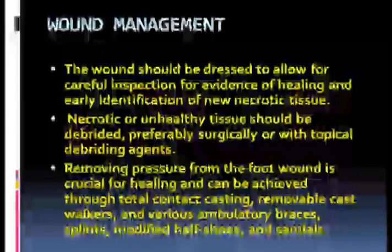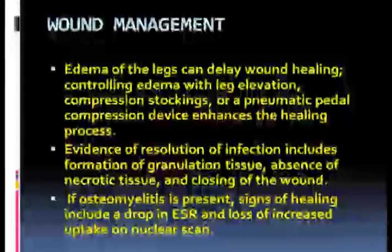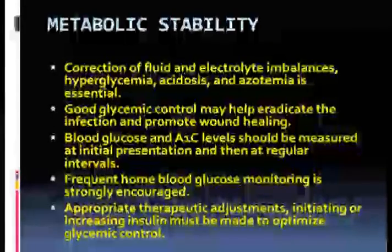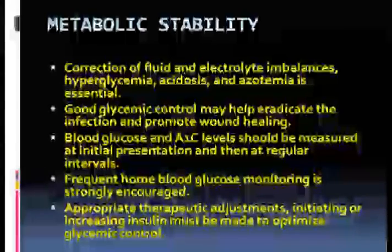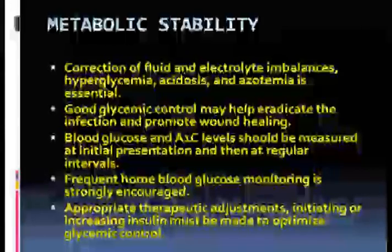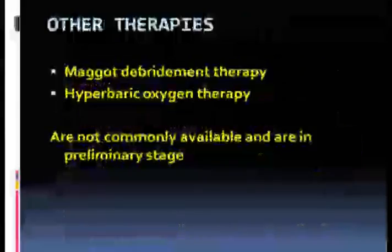If osteomyelitis is present, signs of healing include a drop in ESR and loss of increased uptake on nuclear scan. We also have to take care of metabolic stability. Correction of fluid and electrolyte imbalances, hyperglycemia, acidosis, and azotemia is essential. Good glycemic control may help eradicate the infection and promote wound healing. Blood glucose and HbA1c levels should be measured at initial presentation and at regular intervals. Frequent home blood glucose monitoring is strongly encouraged, and appropriate therapeutic adjustment — initiating or increasing insulin — must be made to optimize glycemic control.